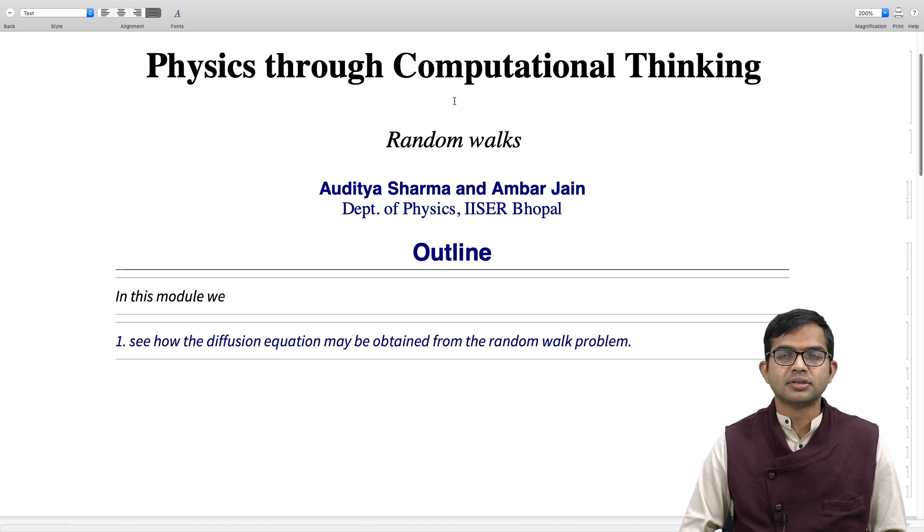Hi guys, so we started our discussion of random walks in the previous module. And now we want to see how random walks are connected to the diffusion equation. I already made a comment in passing that this result, that the average distance covered after n steps